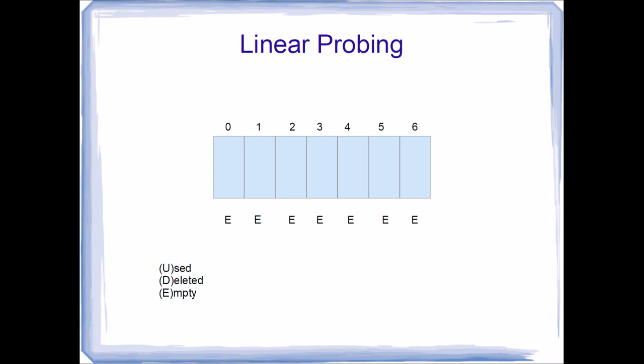Here we have a hash table implemented using a single array. We've initialized the hash table by marking each one of the elements with an E. E indicates that each location within the hash table is empty, which is to say it has never been assigned a valid value.